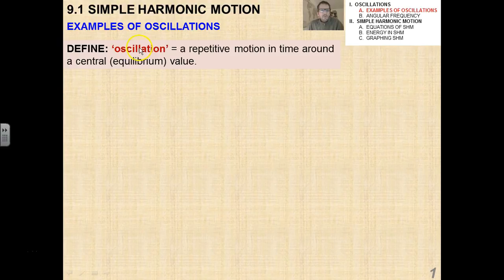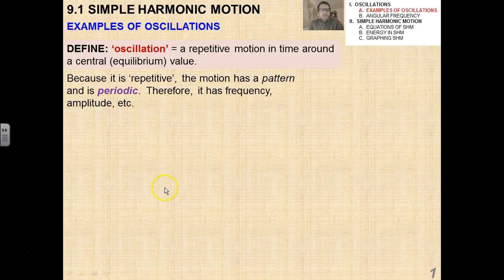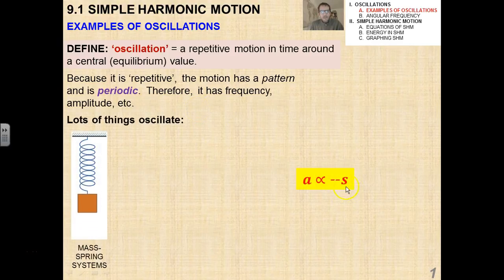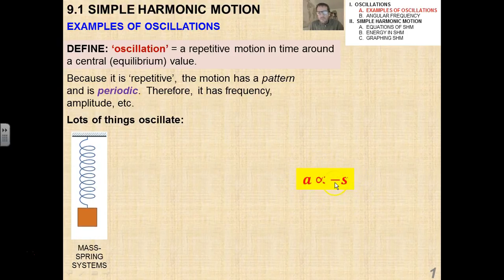So just to remind you what I mean by the term oscillation, it's any repetitive motion in time around a central or equilibrium value. And because it's repetitive, the motion has a pattern and is therefore periodic. Therefore, it has a frequency, amplitude, and so forth. Remember this condition for simple harmonic motion that we derived before. Actually, we didn't derive it. I basically just told you that's what it was. This is going to be the recurring theme in this section. And this is, in fact, the defining equation of simple harmonic motion.